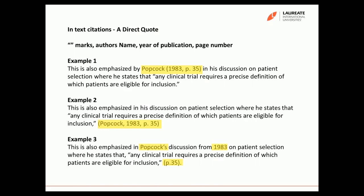Now we'll move on to in-text citations and paraphrasing. When you paraphrase, you need to include the author's name and the year of publication. Paraphrasing means when you condense someone else's ideas or theories and change the words and word order so that it fits into your work. However, you still need to give credit to the original author. In the first example, when there are two or three authors, you put the names of both authors of that piece of work and the year of publication.